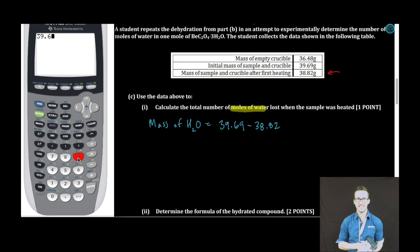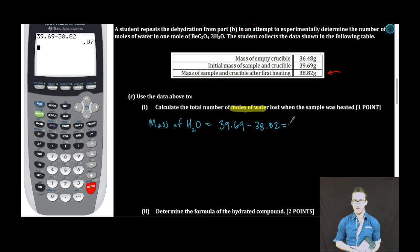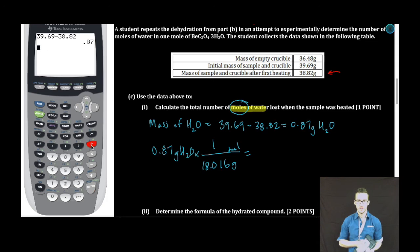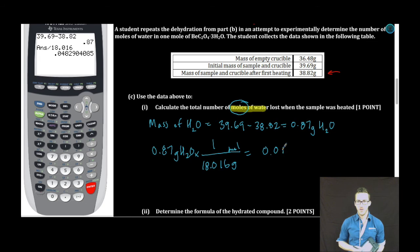Let's do some calculator. 39.69 minus 38.82. We've got 0.87 grams of water. Feeling really great about myself. About to move on when I realize I won't get the point if I don't convert to moles. So, 0.87 grams of water. Quick conversion here to moles. One mole of water is about 18.016 grams. Using sig figs here, I get 0.048 moles of water.